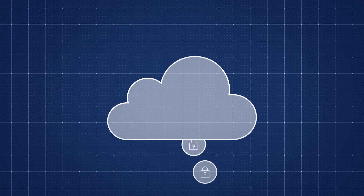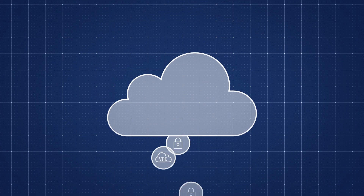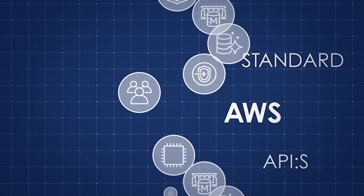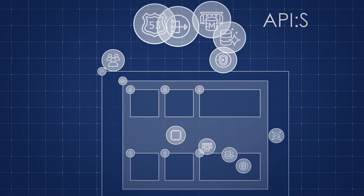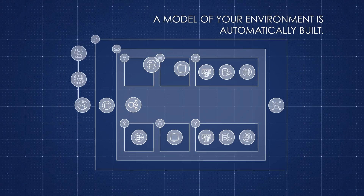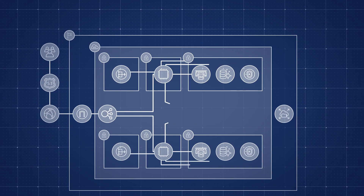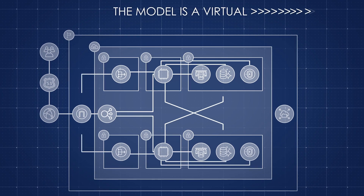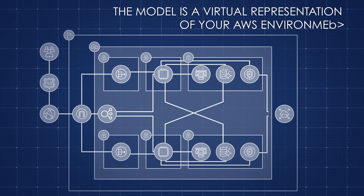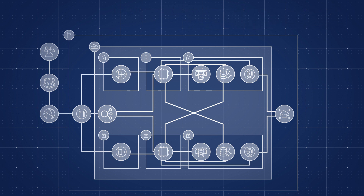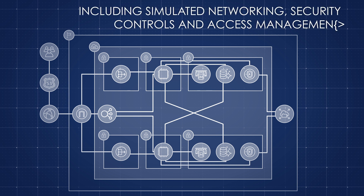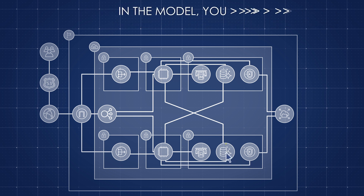By providing SecureCAD Vanguard with read access through standard AWS APIs, a model of your environment is automatically built and visualized. The model is a virtual representation of your AWS environment, including simulated networking, security controls, and access management.